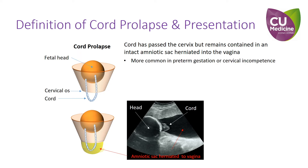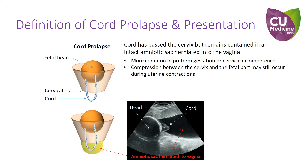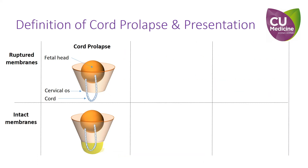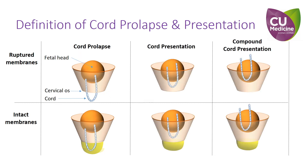This latter condition is more common in preterm gestation or cervical incompetence. Although the membranes are intact, compression between the cervix and the fetal part may still occur during uterine contractions. Upon rupture of the membranes, the cord becomes unprotected in the vagina or may even be flushed out. In such cases, the fetal risk is higher than that of cord presentation or compound cord presentation. Hence, we redefine and reclassify cord prolapse, cord presentation, and compound cord presentation with ruptured or intact membranes. This classification covers all possible conditions and more accurately reflects their risk.